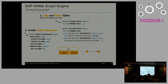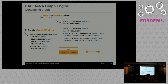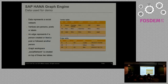From database theory it's usually not a good idea to denormalize data because of update problems. We know vertices need to be in a table, but sometimes it's better to have persons in one table and posts in a different table. For cases where you want to stay in a normalized data schema, you can define views instead of tables and create a graph workspace on top of the view, and everything works.